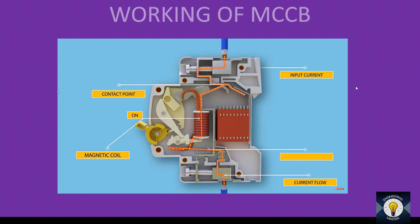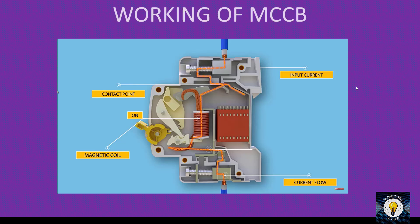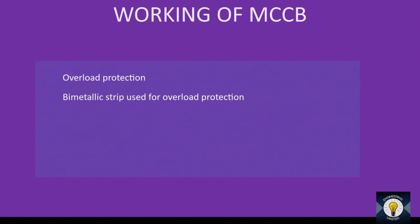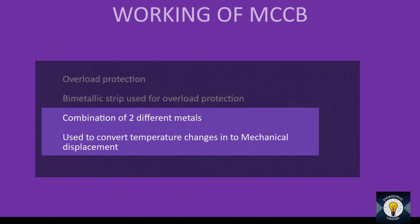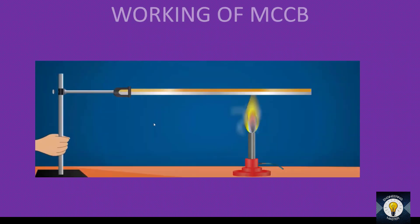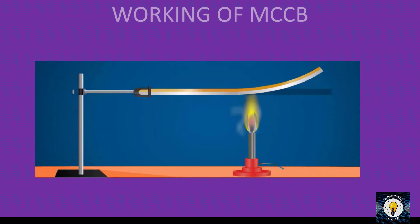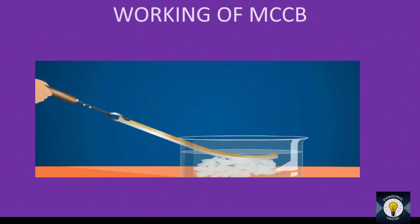If a short circuit happens, the current increases by a huge amount — there is a sudden surge of current. The magnetic trip unit is used to trip the MCCB. The bimetallic strip is used for overload tripping. The bimetallic strip is a combination of two metals used to convert temperature changes into mechanical displacement. While heating, the bimetallic strip bends; if the temperature returns to normal, the bimetallic strip comes back to the same position.